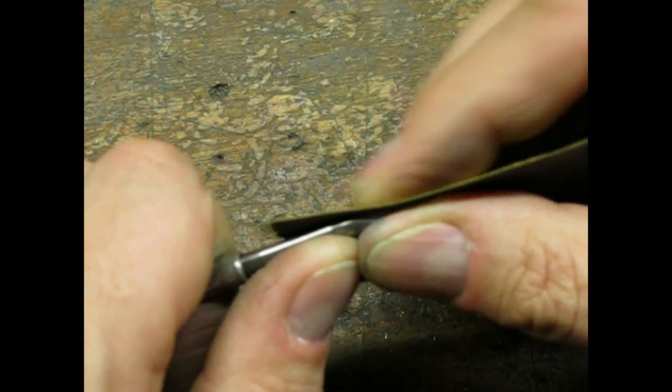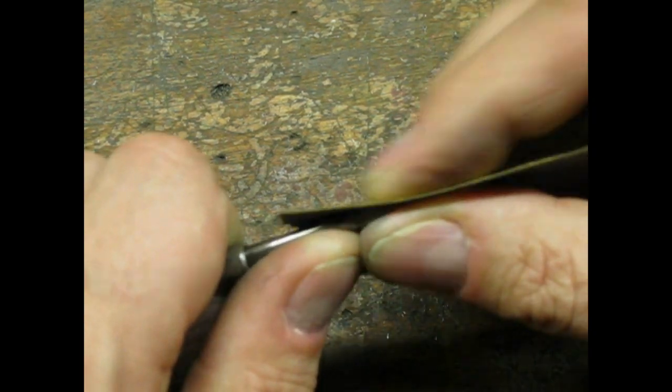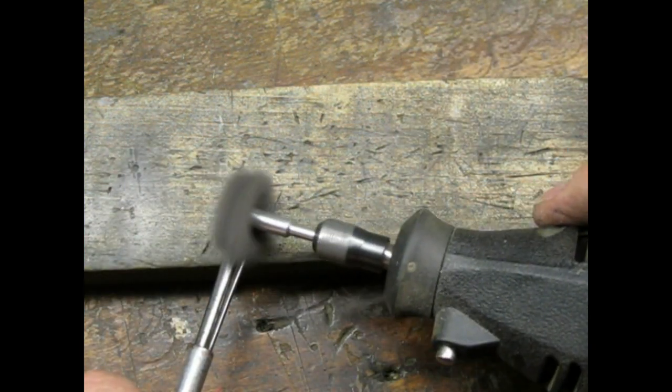I was able to clean up the blade on the smaller red handled screwdriver with a little bit of sanding and scotch-brite.